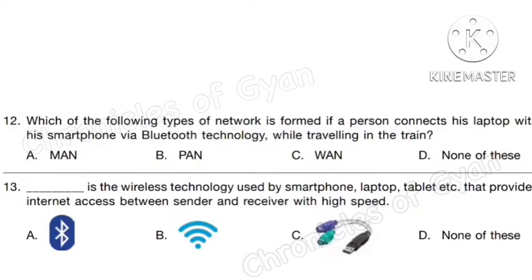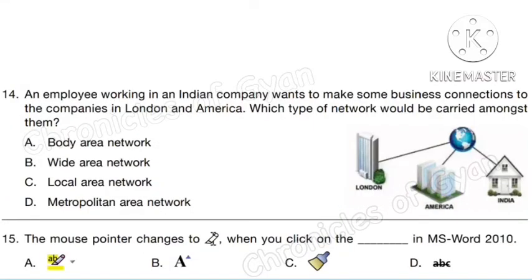Question 13. The blank is the wireless technology used by smartphones, laptops, tablets, etc., that provides internet access between sender and receiver with high speed. Correct answer is option B: Wi-Fi, and it works on radio frequency. Question 14. An employee working in an Indian company wants to make business connections with companies in London and America. Which type of network would be used? Correct answer is option B: Wide Area Network.